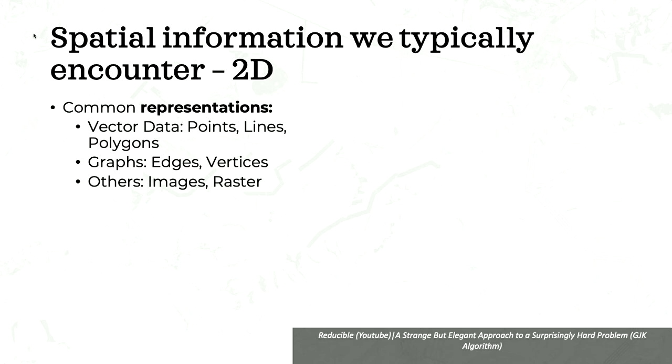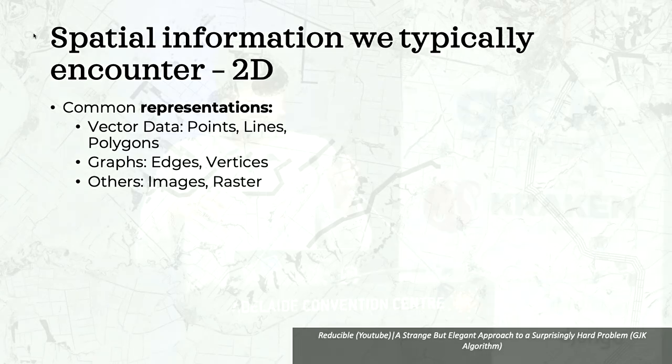You can abstract over vector representations using graphs, where the shape of things no longer really matters — only the connectivity of the objects you care about. 2D data also includes things like images and rasters, where things are recorded in pixels. Each pixel represents some actual real-life geographic area, and for that area you measure some value — maybe the amount of rainfall, the amount of solar potential, and so on.